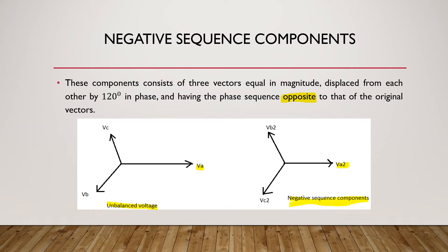Here phase A is taken as reference. In the original unbalanced voltage the phase sequence is A, B, C. In the negative sequence components the phase sequence is A, C, B — opposite to the original. The vectors still have the same magnitude displaced from each other by 120°, but with reversed phase sequence.